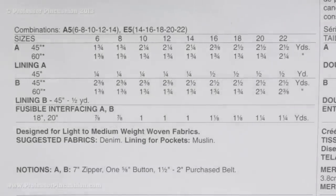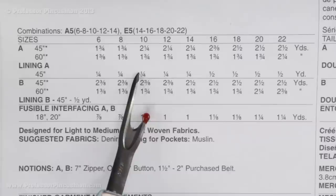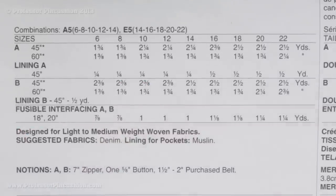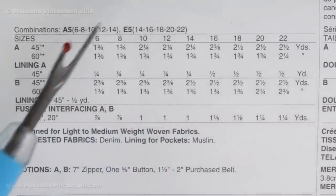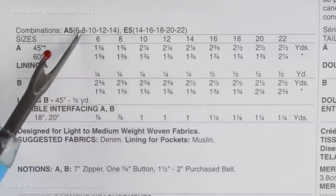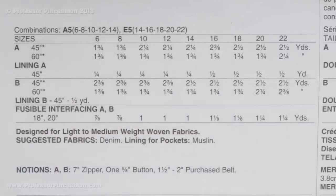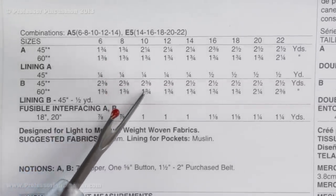Before consulting the yardage chart, there are three things you need: first, you need to know what size you are; second, you need to know which view you're making; and lastly, you need to have your fabric picked out. Once you have all three, you can look at the yardage chart to figure out how much fabric you need. For example, if I'm doing size 10 and pants view B with denim, the sizes are listed in the top row. They actually list all sizes the pattern comes in regardless of which envelope — this envelope has sizes 6 through 14, but there's another envelope with other sizes. Everything underneath size 10 relates to my size.